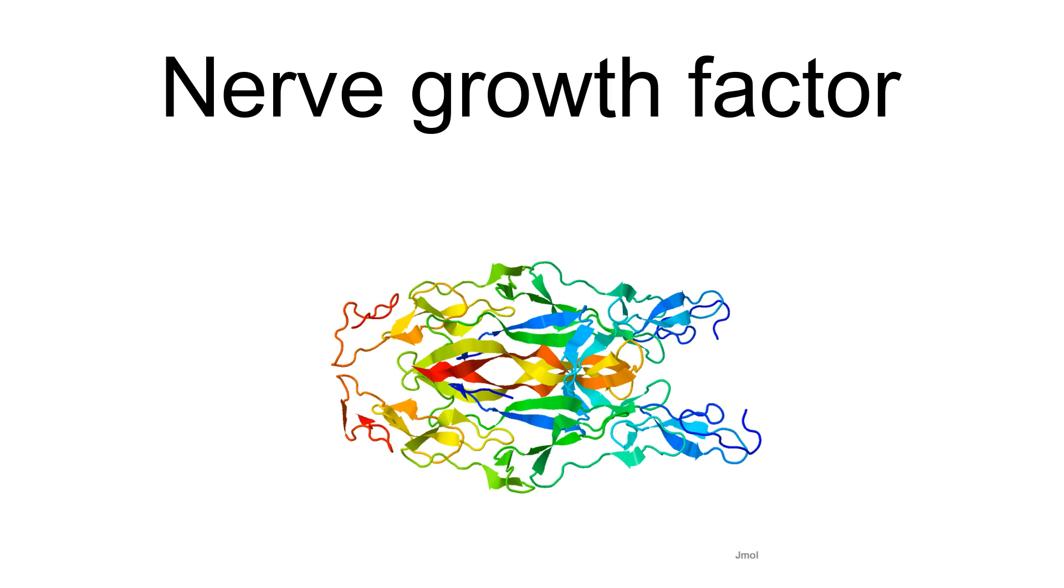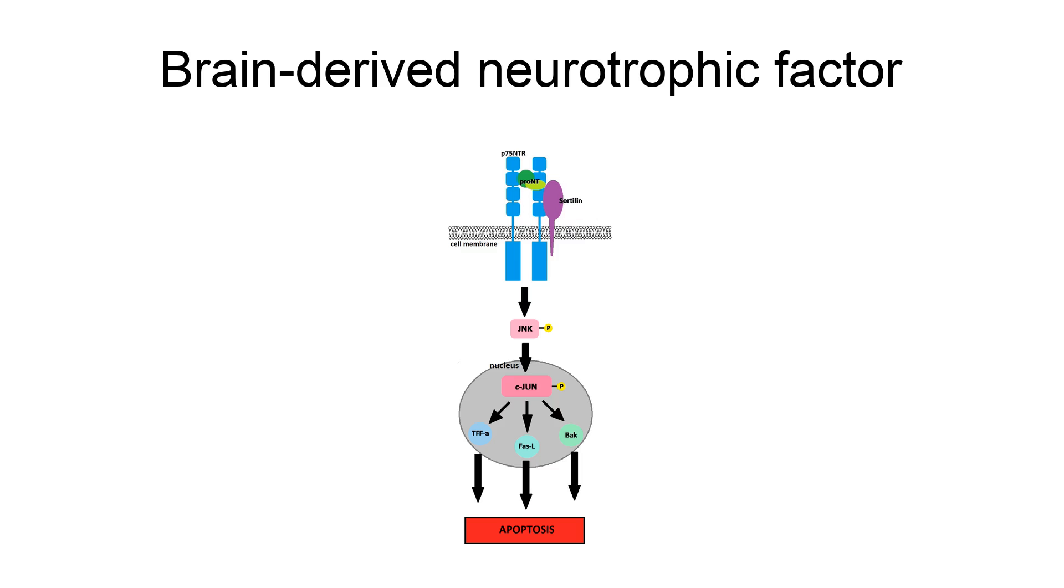Brain-derived neurotrophic factor (BDNF) is a neurotrophic factor found originally in the brain, but also found in the periphery. To be specific, it is a protein that has activity on certain neurons of the central nervous system and the peripheral nervous system. It helps to support the survival of existing neurons and encourage the growth and differentiation of new neurons and synapses through axonal and dendritic sprouting.